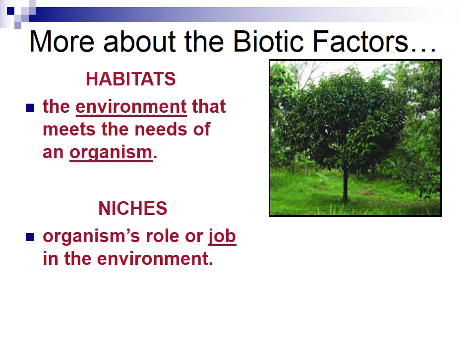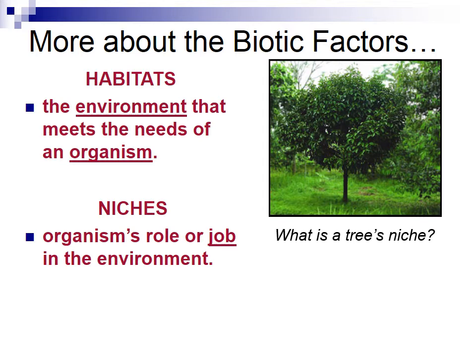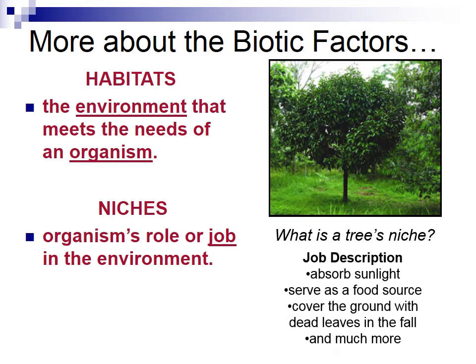Niches is the organism's role or job in the environment. So we're talking about what it produces for the environment. This tree's niche — it provides a home for certain organisms like birds, worms that burrow into the trunk, and spiders that build homes and catch other insects. It creates a home for a ton of organisms. Also, when the leaves come down, it can provide nutrients for the soil and put those nutrients back into the soil. And don't forget it's doing photosynthesis, so it's producing oxygen for other organisms like ourselves.